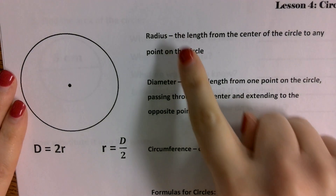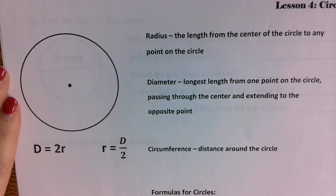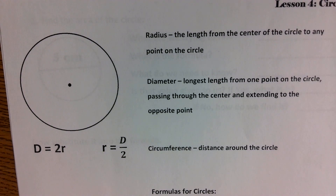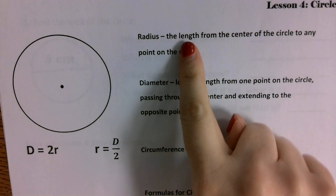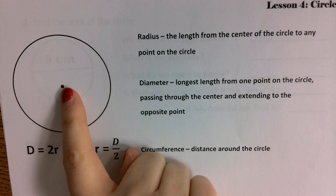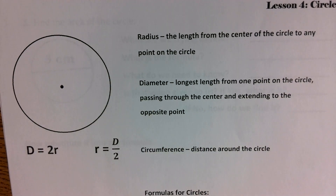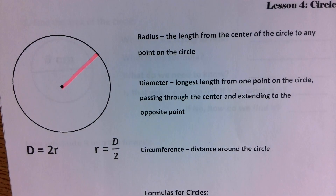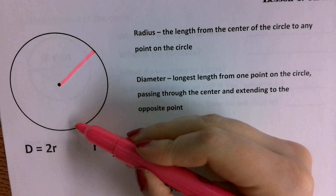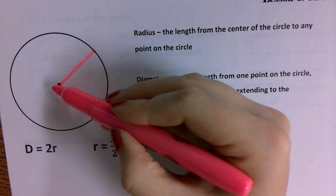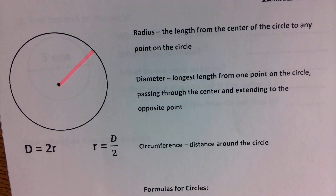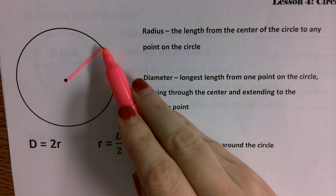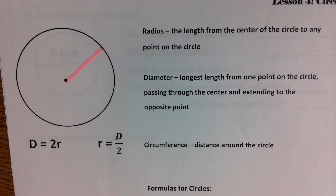Remember, the radius is going to be your half length — the measurement that starts at the center of your circle and extends to any point on your circle. I could draw it from the center to here, from the center to this point, or the center to this point. It does not matter where I draw it to, as long as I start at the center and go to a point on the circle — that creates the radius.